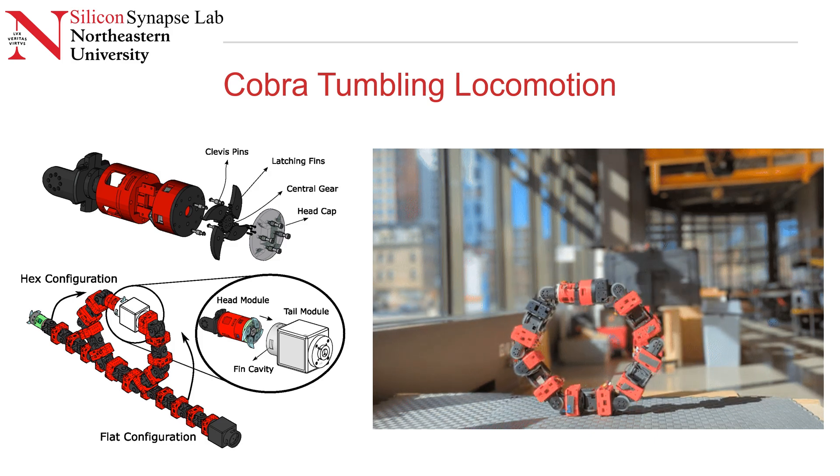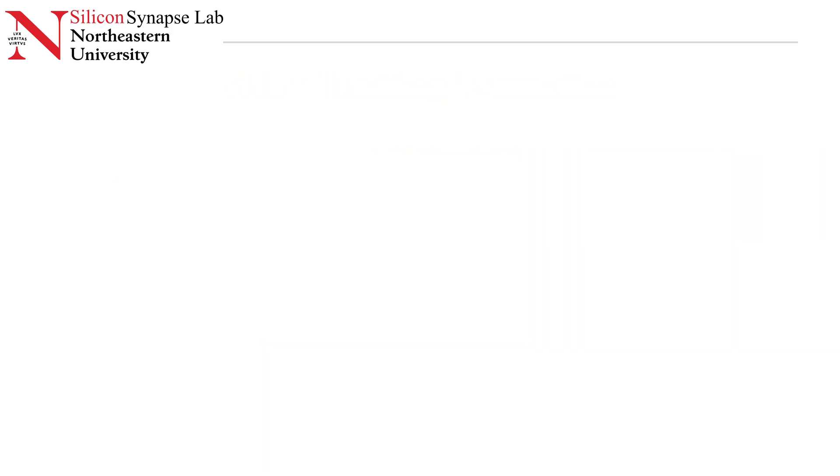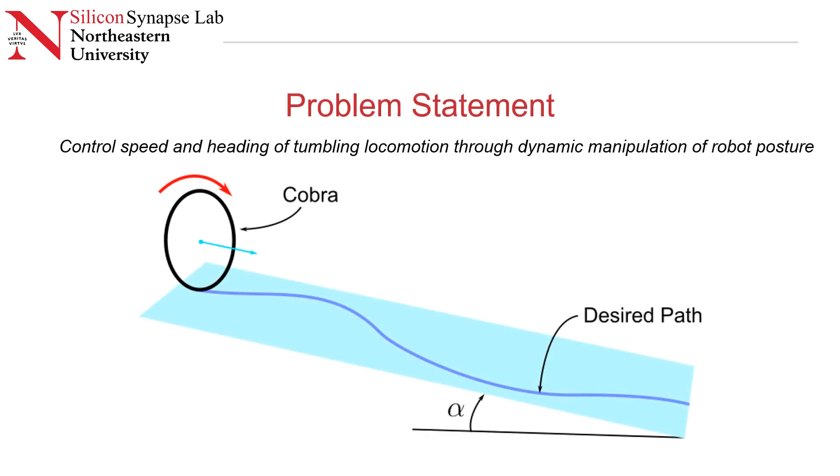While Cobra is rolling, it can actuate its joints to change its posture about its center of mass. Using this posture manipulation, we want to be able to roll down a slope following a desired path. To simplify the problem, we consider a smooth plane inclined at a fixed angle alpha. We don't consider any irregularities on the slope and we don't consider a changing slope angle.